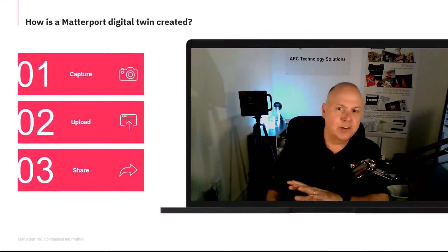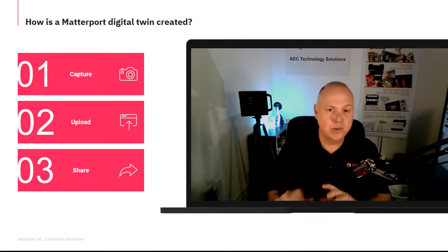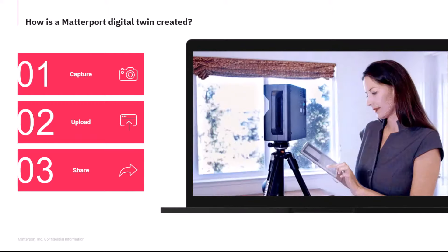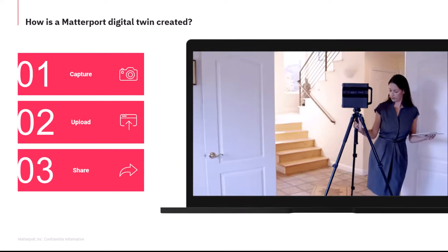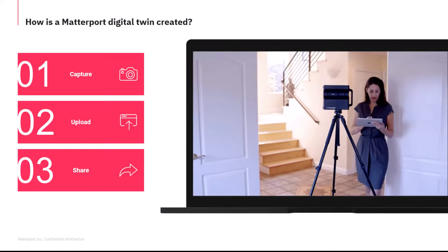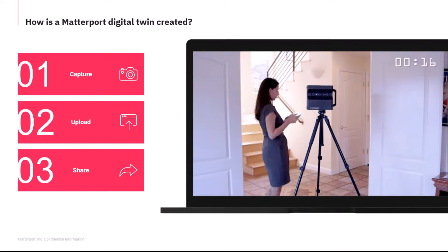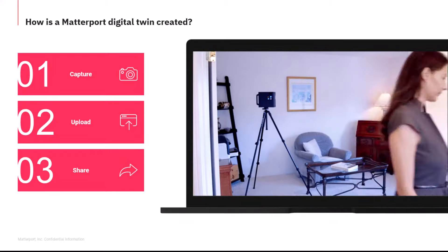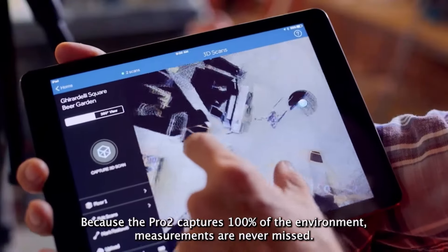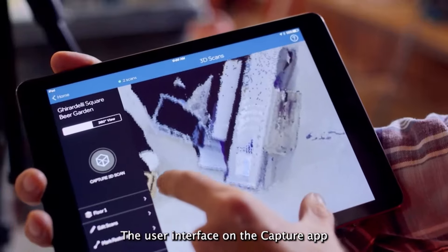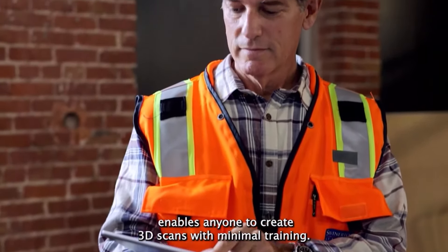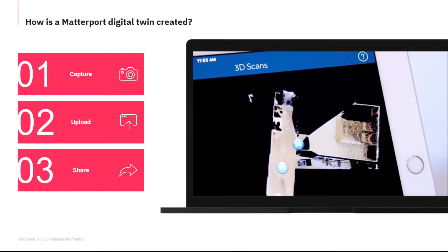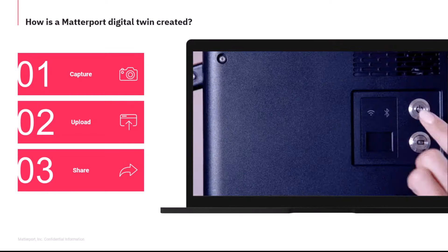Capturing and creating digital twins is super easy. First, you just connect your scanner via Wi-Fi to a mobile device running the Matterport Capture app — available in either iOS or Android. Then you start scanning. As you scan, you can see the data in real time as it's collected, and get immediate feedback regarding alignment errors and missing data in your 3D scan.